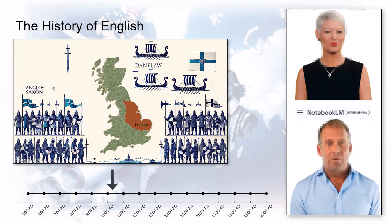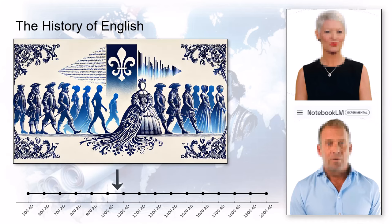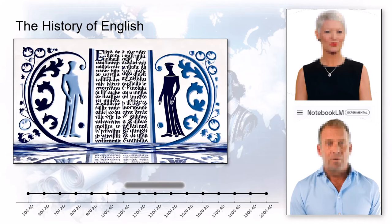Let's shift gears to 1066 — the Norman Conquest. A linguistic earthquake. The Normans conquer England and their language, French, becomes the language of power. Huge shift. English gets knocked down a few pegs — it becomes the language of everyday people, not the elite. And this actually forces English to change, to adapt. It starts simplifying its grammar, trying to be more accessible.